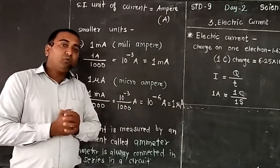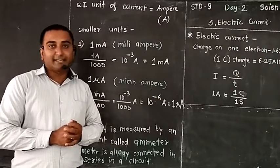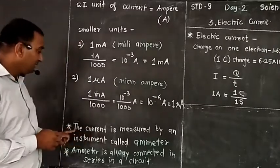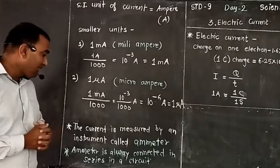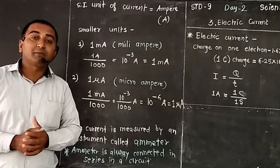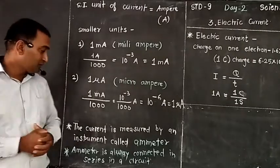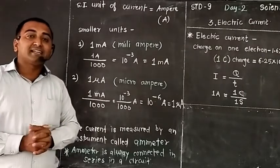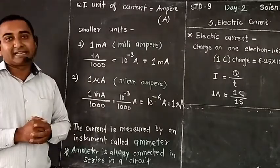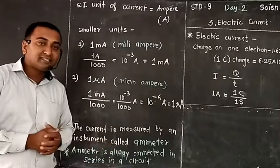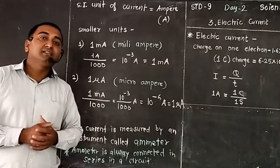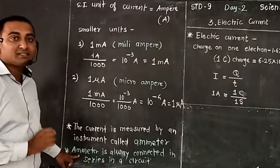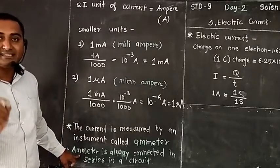Then how can we measure this current in a circuit? The current is measured by an instrument called an ammeter. This ammeter is always connected in series in the circuit. We will discuss series connection later, but keep in mind that ammeter is always connected in series.